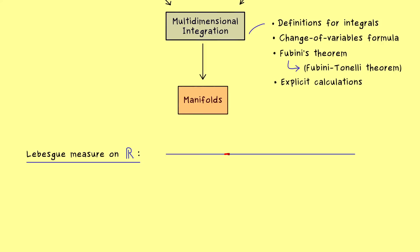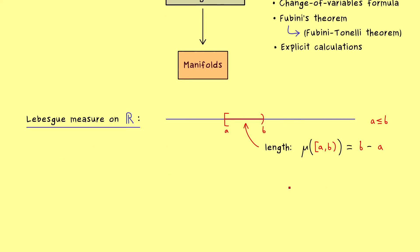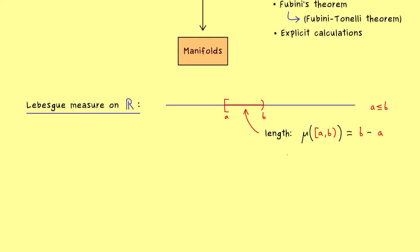A subset on the real number line should have a well-defined length. For example, we already know what this means for an interval on the real number line: if it starts at point A and ends at point B, the length is given by B minus A. More precisely, we write mu of this interval equals B minus A, valid when B is bigger than A. In measure theory, such a function mu is called a pre-measure — it's not a full measure yet, because it only works on intervals and not on more general subsets of R.